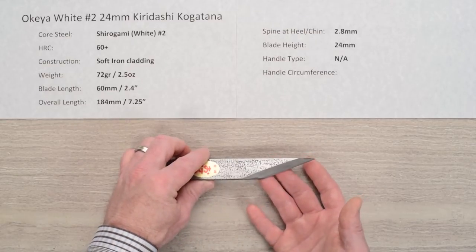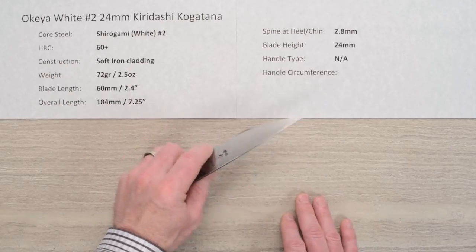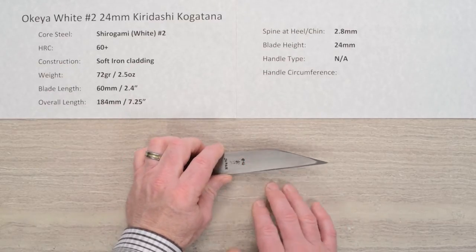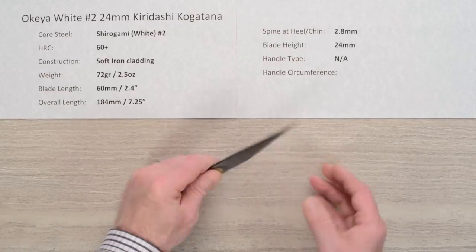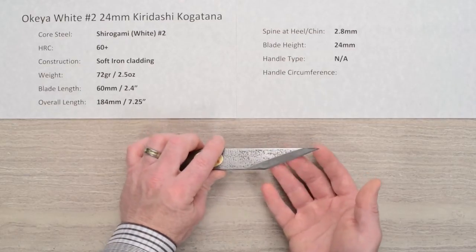This is a true single bevel blade so it has two layers. The softer iron cladding on the top and on the bottom or back side of the blade we have the layer of hard steel, and in this case of course it's a Shirogami.